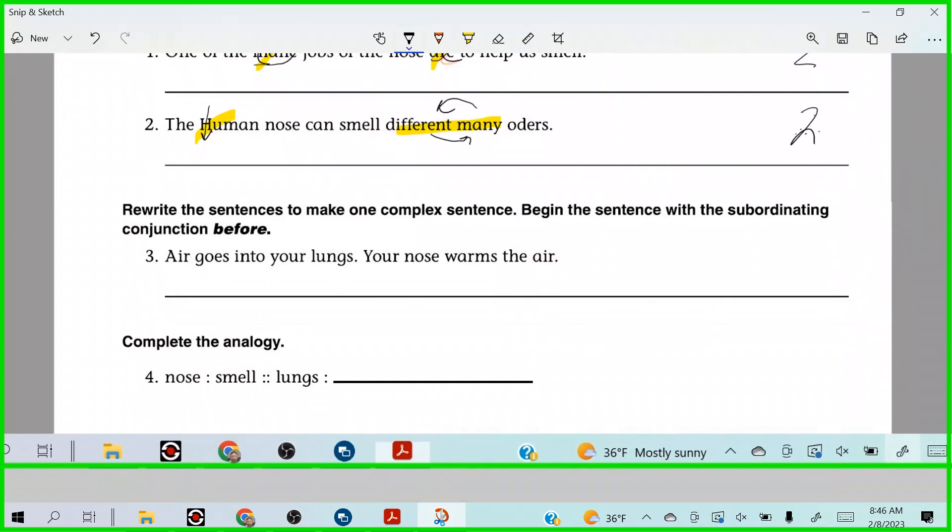All right. So let's take a look. Rewrite the sentence to make one complex sentence. Begin the sentence with the subordinating conjunction before. Vincent James. Go ahead. Before air goes into your lungs, your nose warms the air. All right. So, but how does it look? So I'm going to put before in the beginning. Before. What do we need to do with the a and air? Who can tell me? If you're going to put before. What is it? Allura. Lowercase. Yeah.